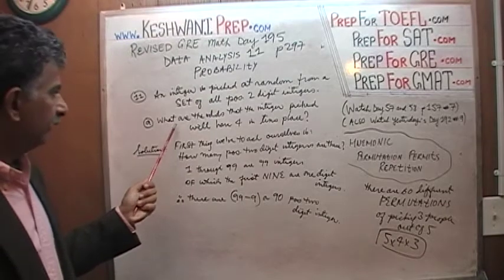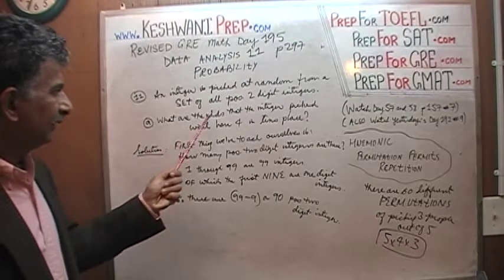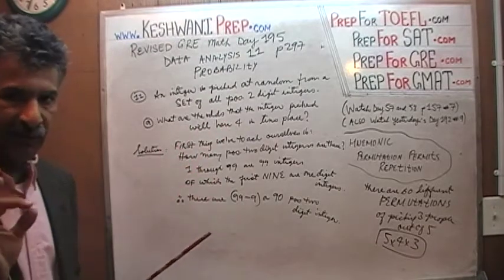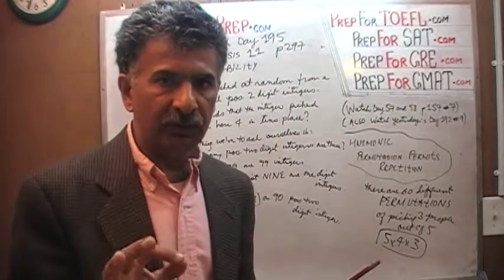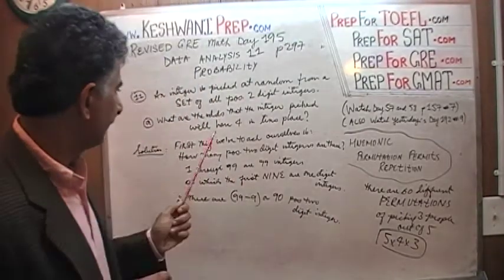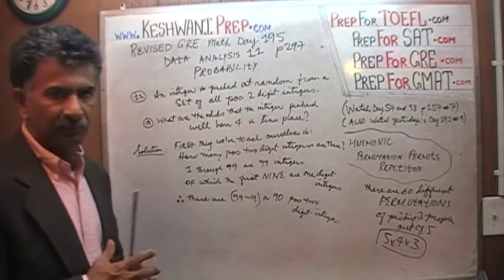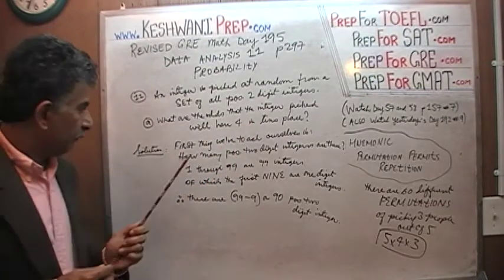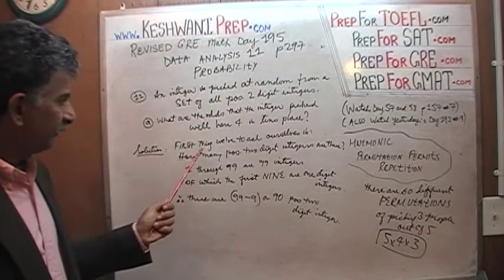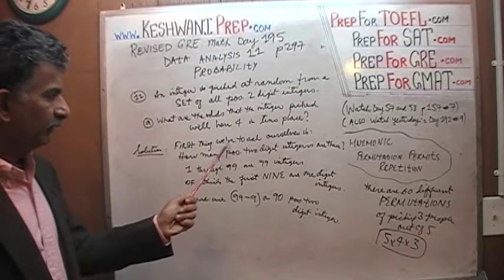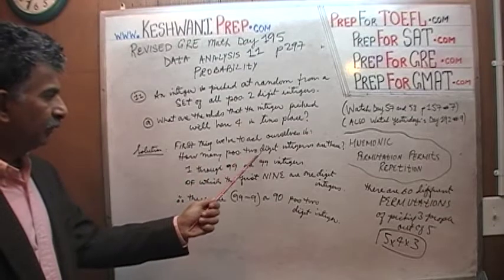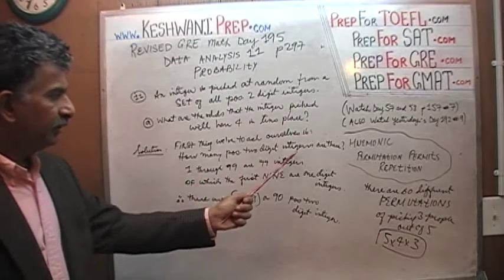Part A is: what are the odds that the integer you pick at random from the set of all positive two-digit integers will have four in the tens place? Before we can answer that question, the first thing we have to ask ourselves is: how many positive two-digit integers are there?